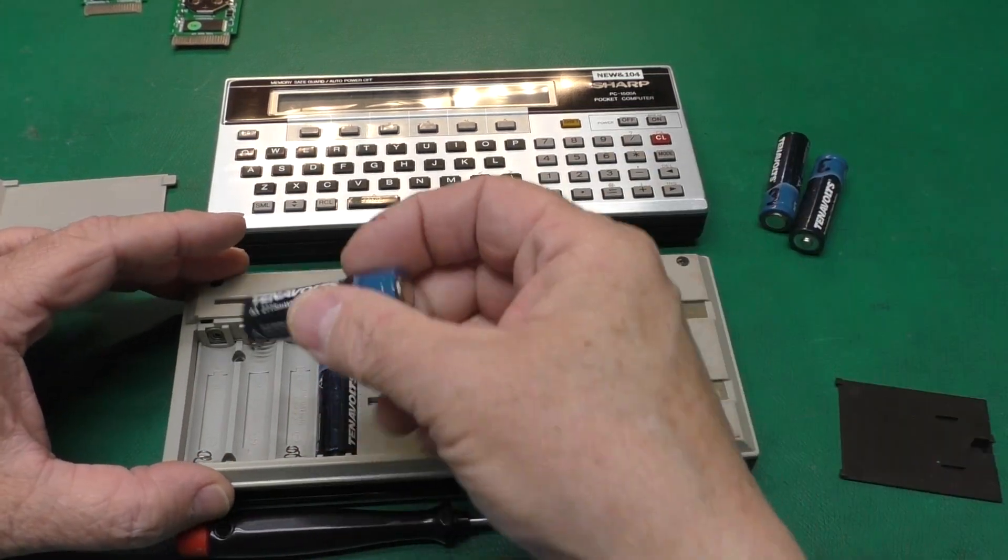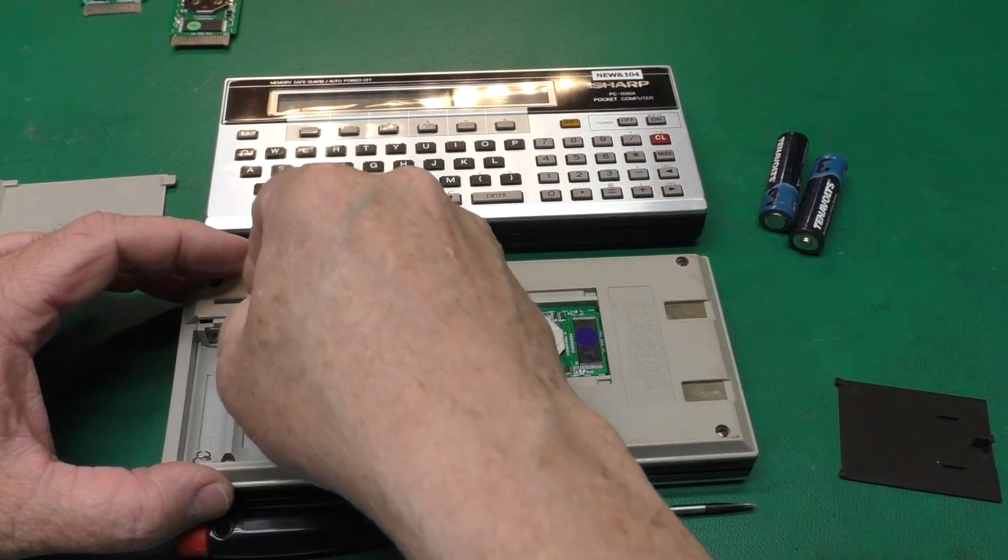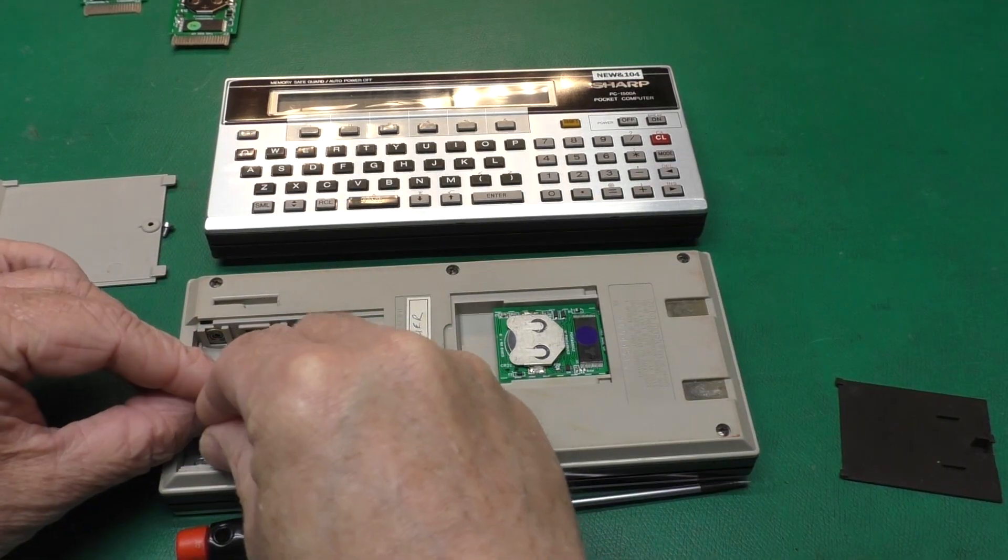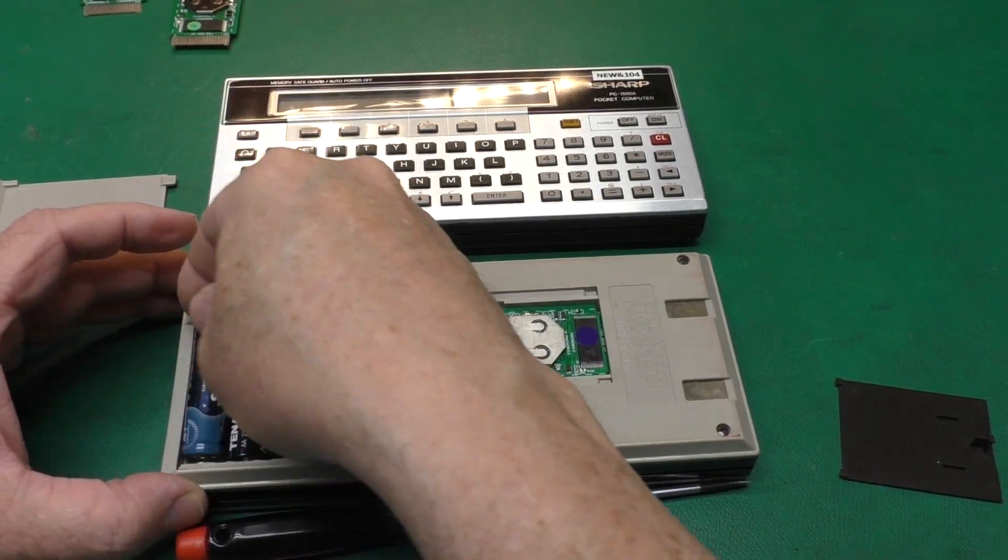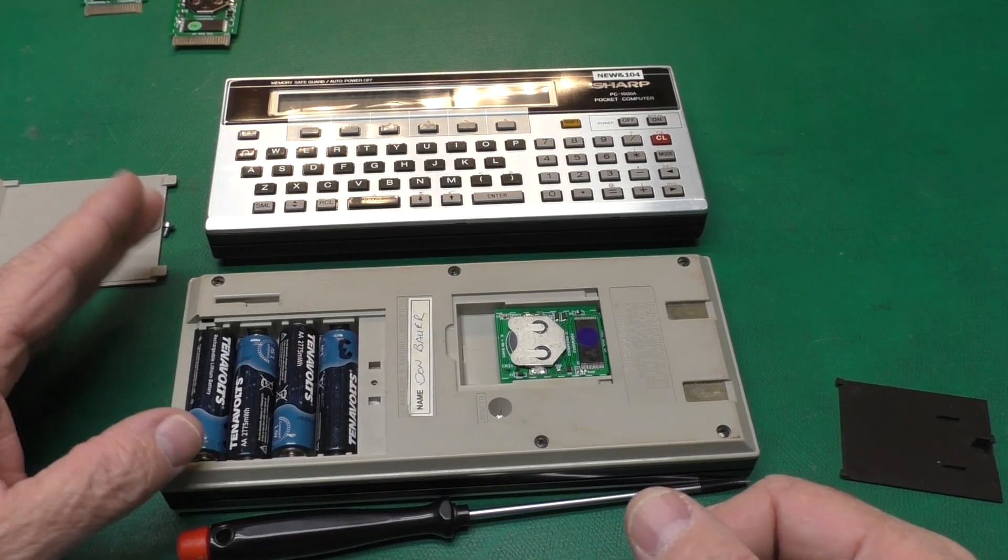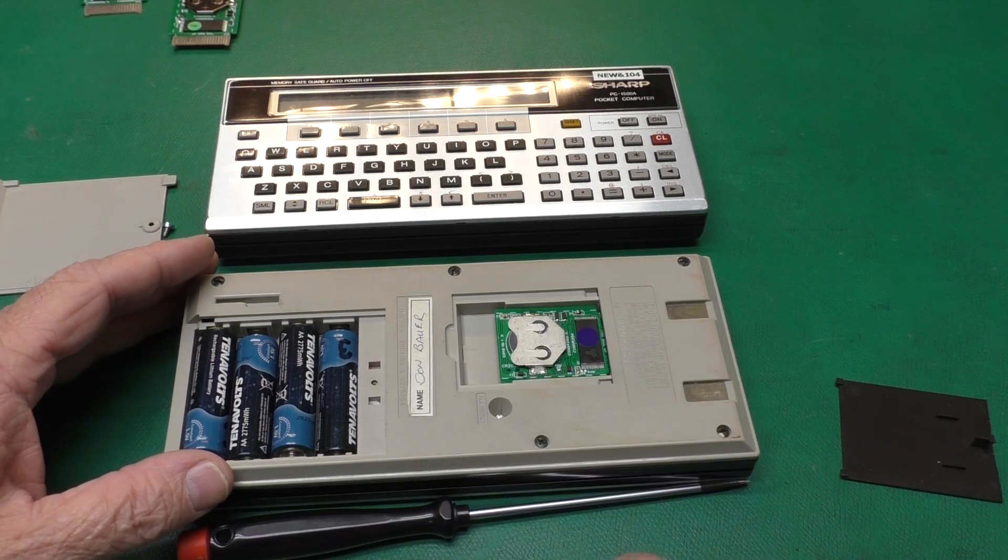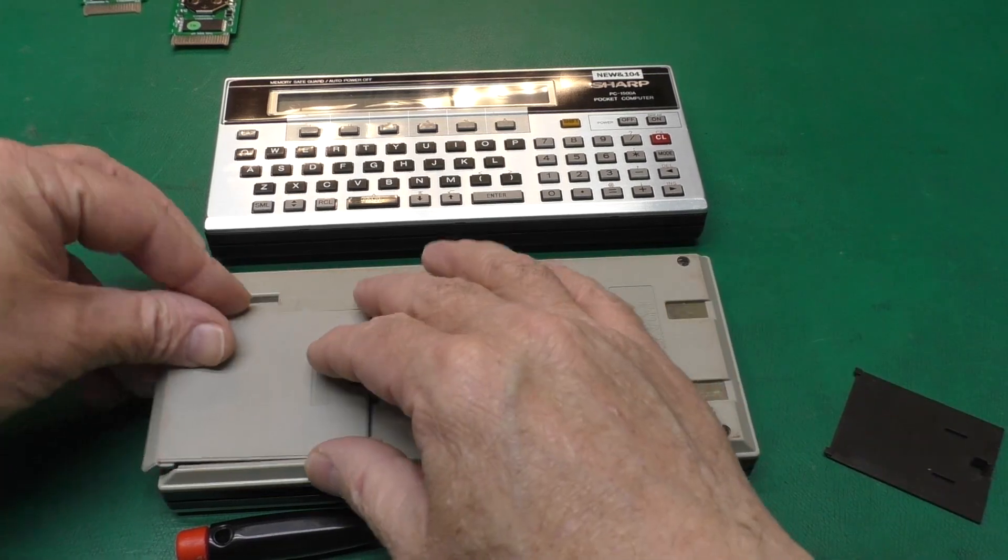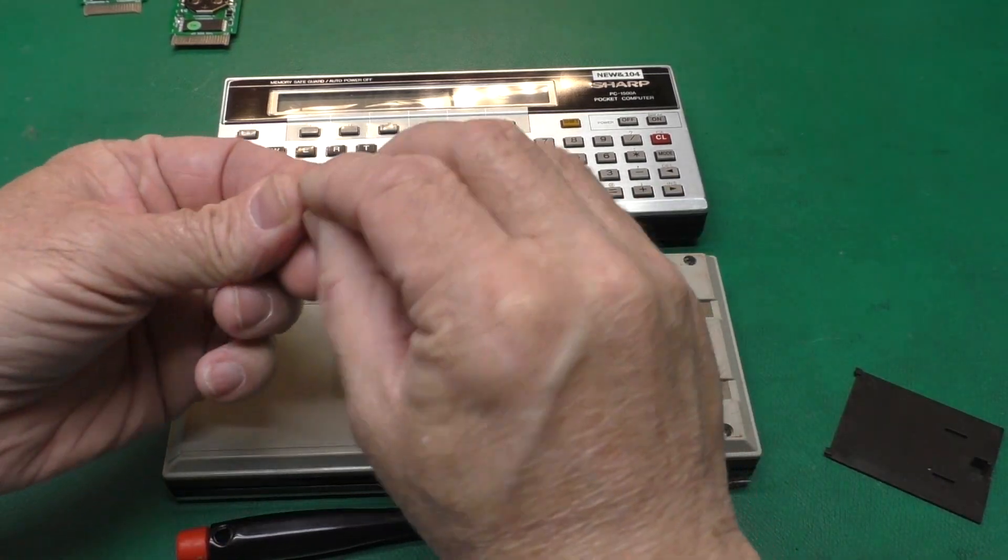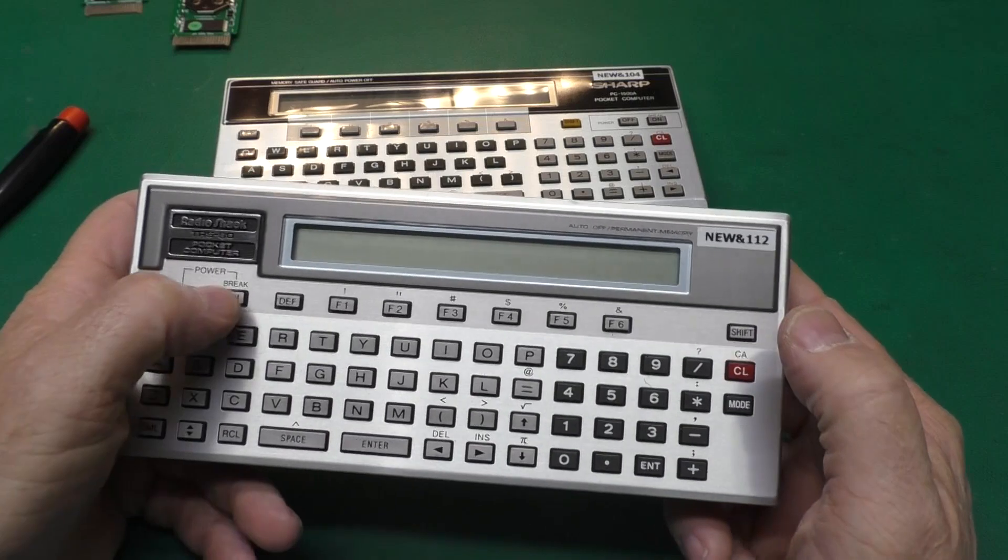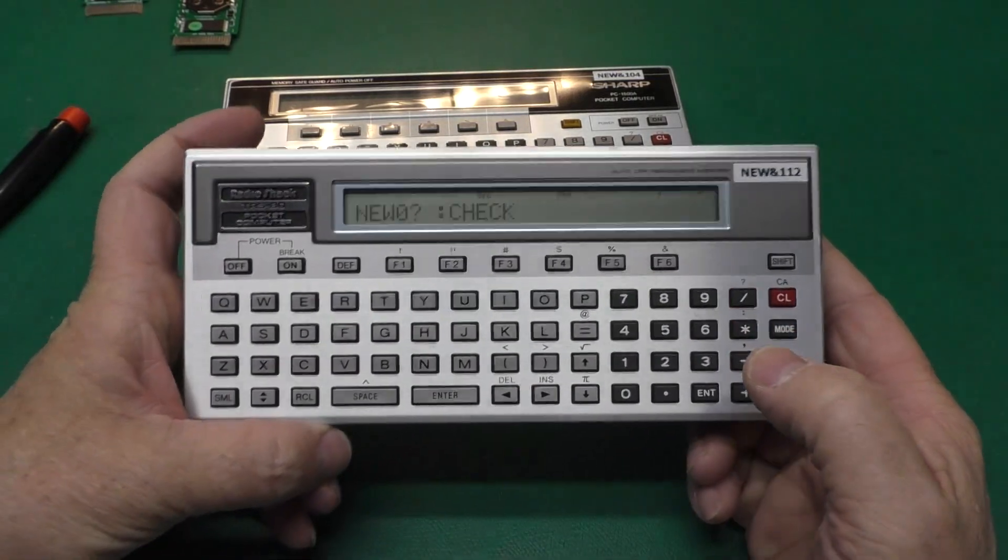It's very important to make sure that when you're installing and removing this module that you do not have the batteries in the computer. Once you have the module installed and configured, you can swap the batteries on the computer and the battery here will keep all the contents of the RAM intact. Go ahead and put this back on. Put your back cover on.